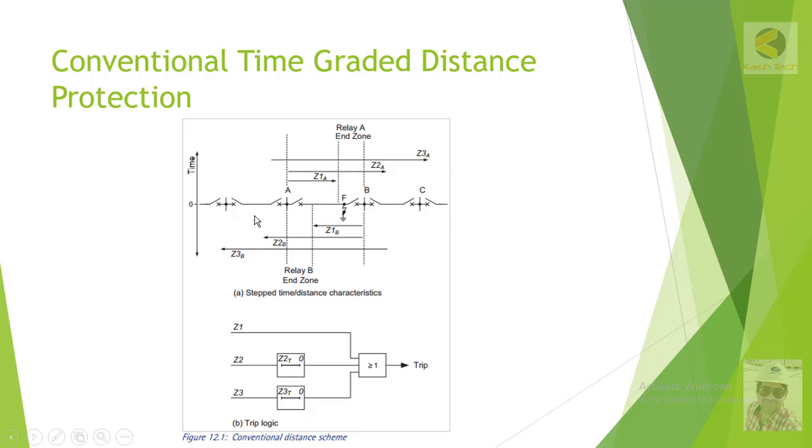This blocking scheme is more in favor of tripping. If the communication is available or not available, in both cases it will trip the breaker at station A. If you want to set the priority to tripping, even in case of communication failure, we can choose the blocking scheme.